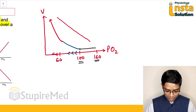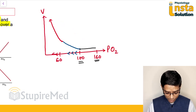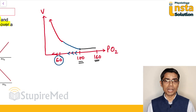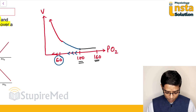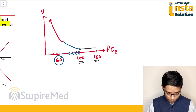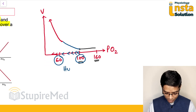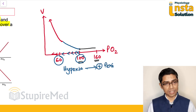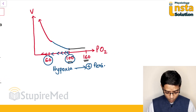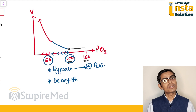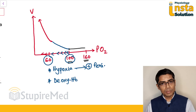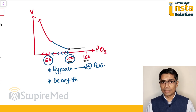Why does ventilation rise maximally when the partial pressure is below 60 mmHg? When partial pressure decreases from 100 to 60 mmHg, hypoxia is stimulating ventilation via peripheral chemoreceptors. But simultaneously, because of hypoxia, more and more deoxyhemoglobin is also being formed, because lower partial pressure of oxygen means more deoxyhemoglobin.